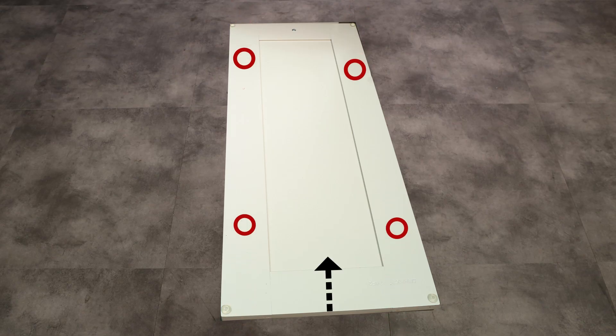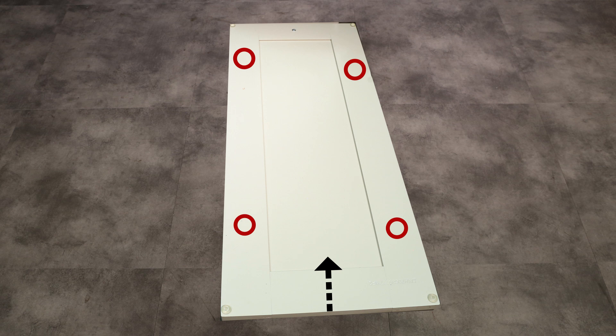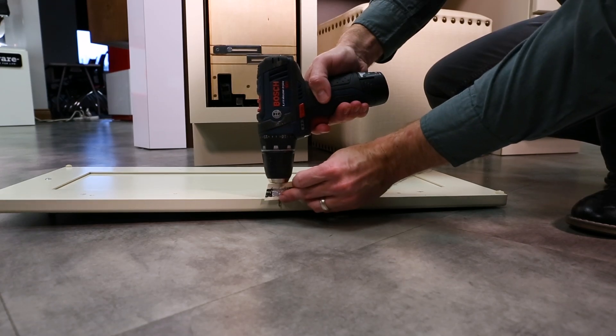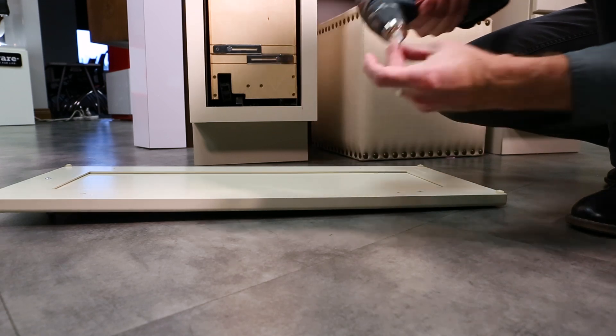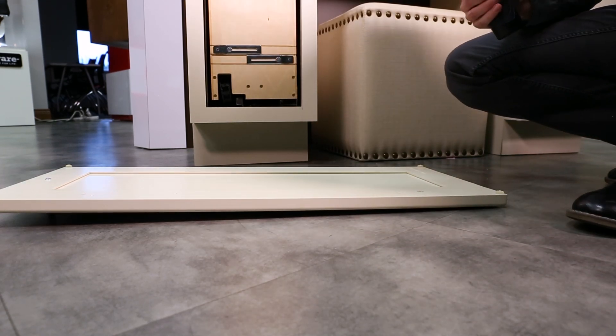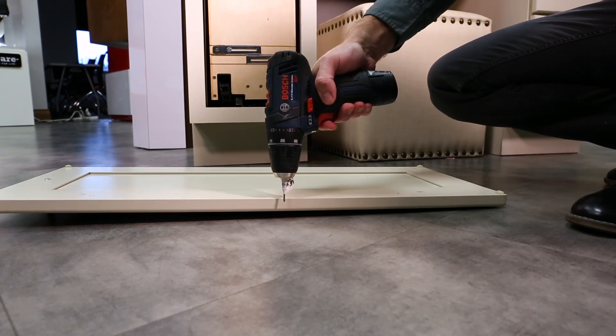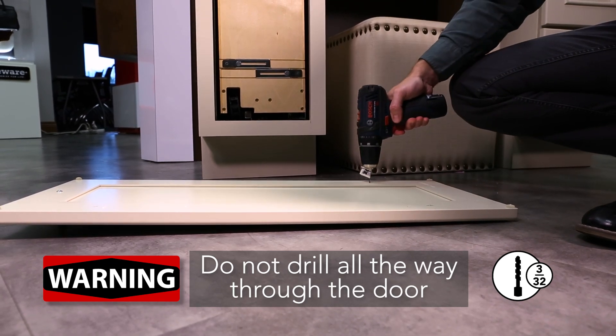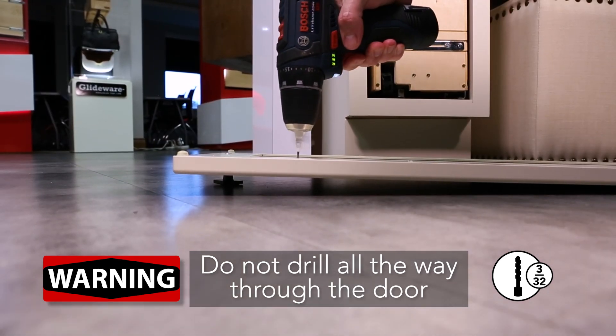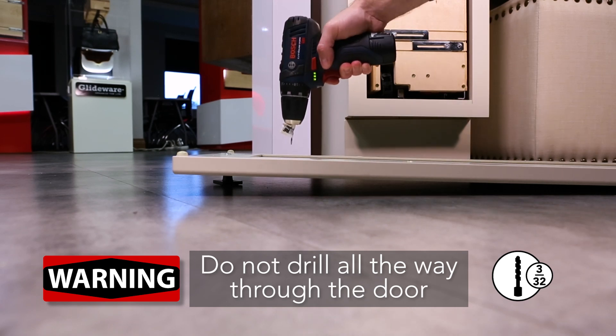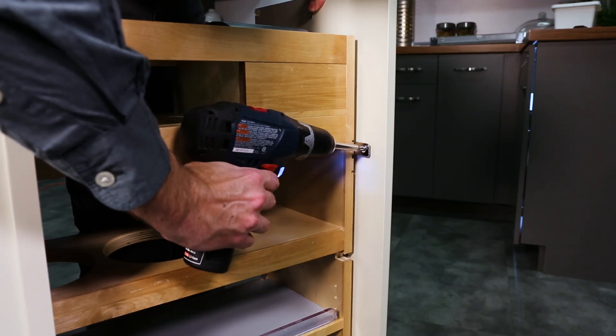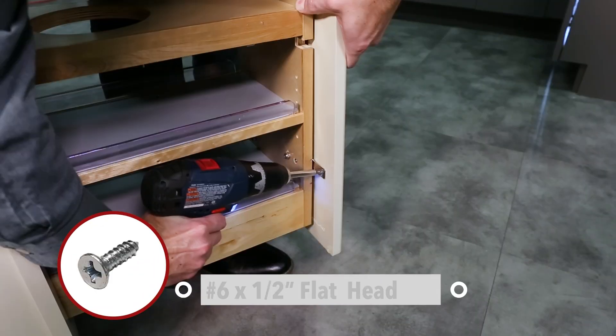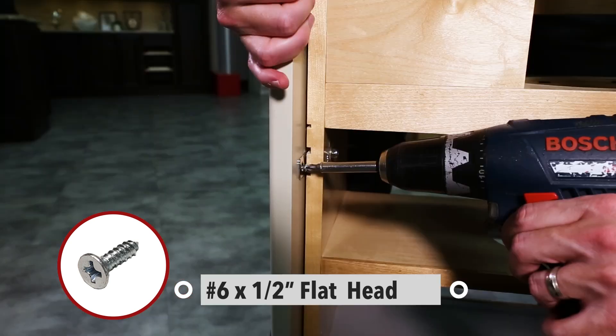Measuring from the bottom of the door, transfer those dimensions to the center of the thick portion of the door. Prior to pre-drilling, it's always a good idea to note the thickness of the door. Add some tape to your drill as a guide to keep you from drilling all the way through the door. Pre-drill the holes using your 3/32 inch bit. Attach your door using the number 6 by 1/2 inch screws.